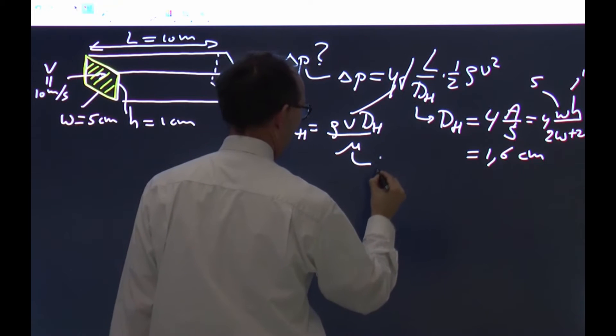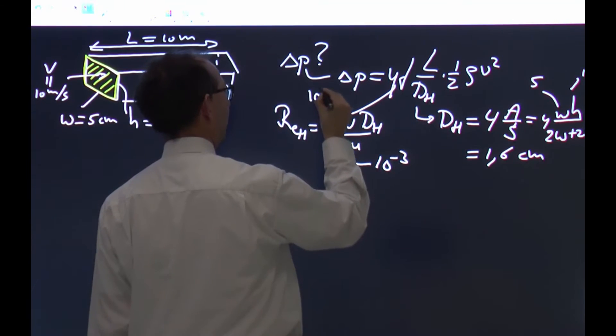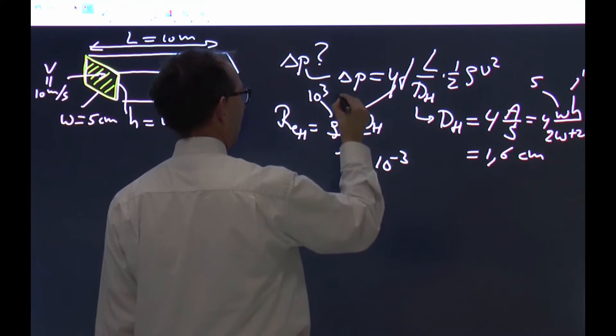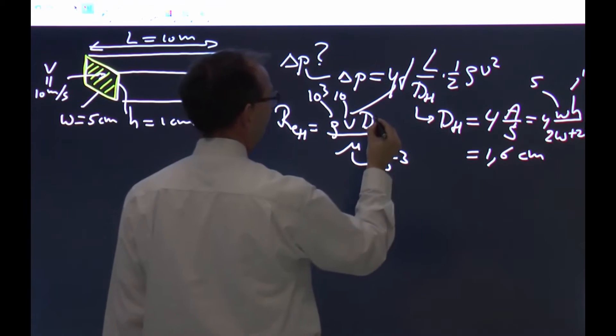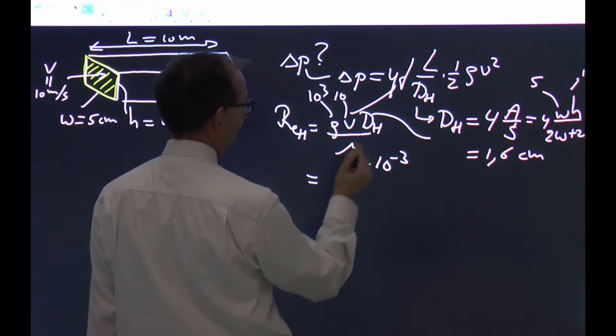So it's rho v d_hydraulic over viscosity. Since it's water in SI units, this is 10 to the minus 3, 10 to the plus 3. We know the velocity average, 10 meters a second. We just computed the d_h, so I can find the Reynolds number.